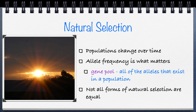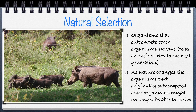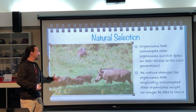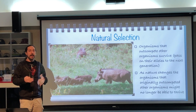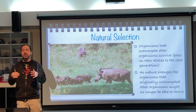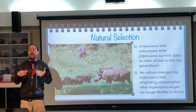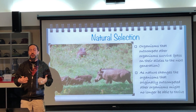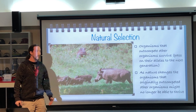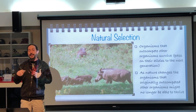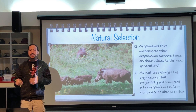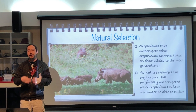Natural selection is about organisms that out-compete other organisms. Some organisms are able to survive, while others will not survive because their traits are not favored — their traits don't do well in their environment. That is the crux of natural selection: not every organism that exists is going to do well in its environment.